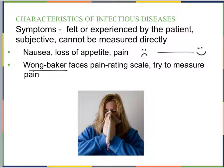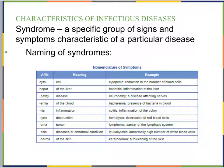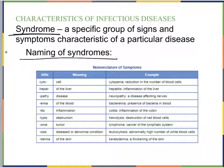Infectious diseases have both signs and symptoms due to colonization. When classifying these, we can identify a syndrome — a specific group of signs and symptoms that are characteristic of a particular disease.